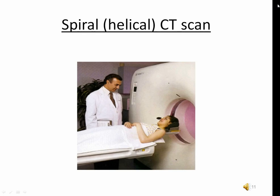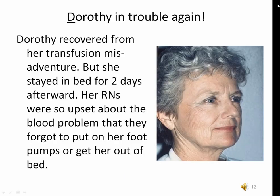A spiral CT is faster and has higher resolution, allowing the radiologist to view perfusion in the lungs by looking across all tissue planes for clots. In a spiral or helical CT scan, the scanner rotates around the body in a spiral — like the stripe on a candy cane — to create three-dimensional images. This type of CT can detect abnormalities with much greater precision and is also much faster than a conventional CT scan.